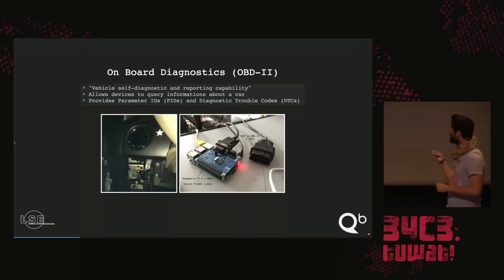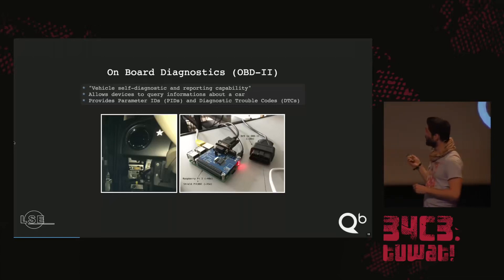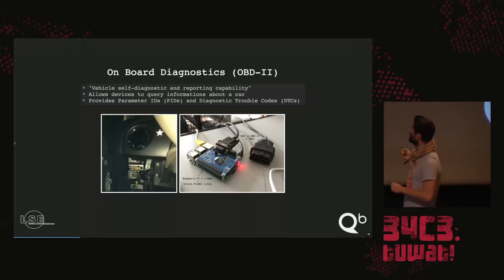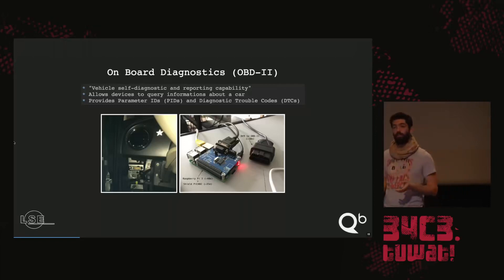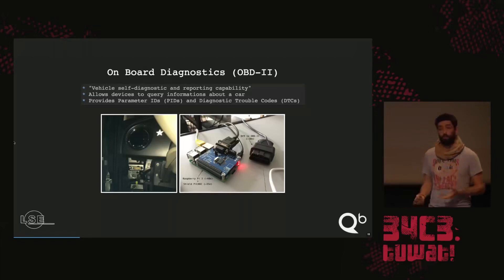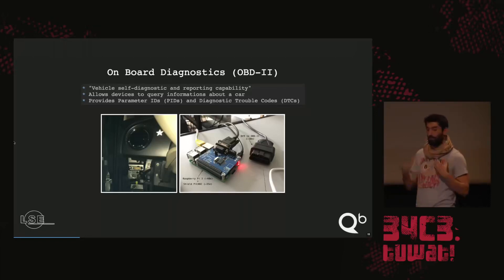With just a Raspberry Pi, a Pi CAN 2 Shield, and a DB9 to OBD2 cable, I was able to run a full Linux system that understands CAN messages and can talk with the CAN bus — communicating with my car without breaking anything.